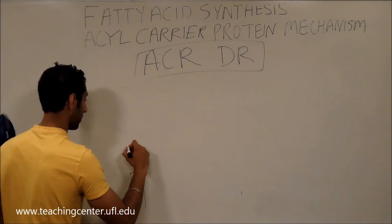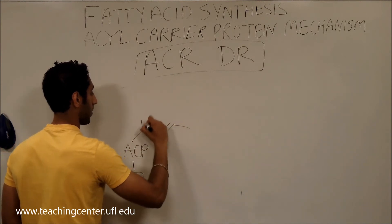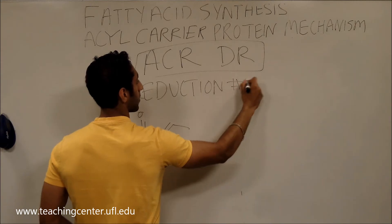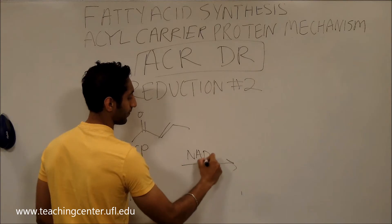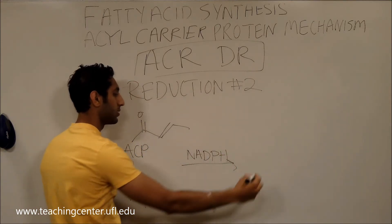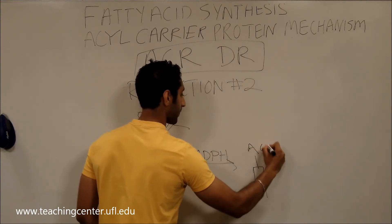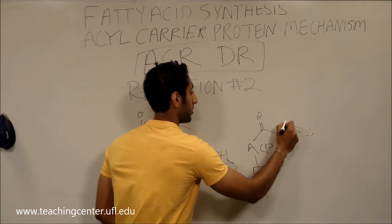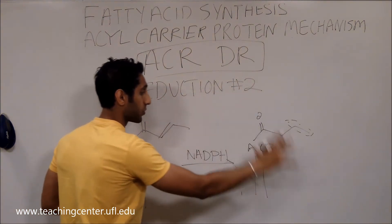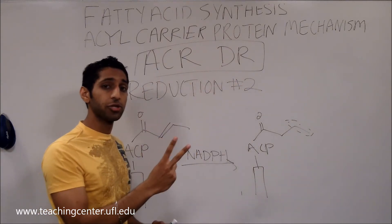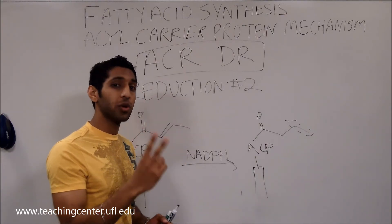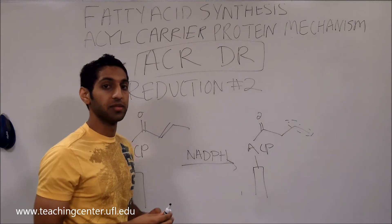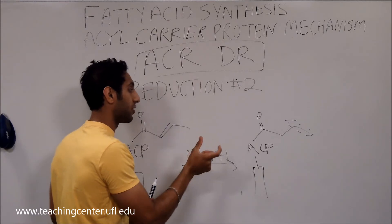Redrawing what we have — this is reduction two. You use another NADPH to get rid of that double bond. And then voilà, you've added two new carbon atoms to the chain. Basically, this process repeats itself again, going through ACR Doctor again to add another two carbon atoms. In chain elongation, the reason it adds two carbon atoms each time is because it's using acyl-CoA as the substrate to add two-carbon subunits — that's why it's always in intervals of two carbons.